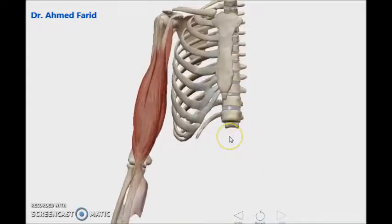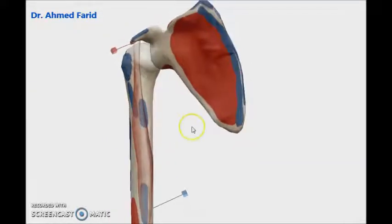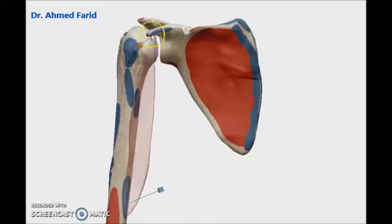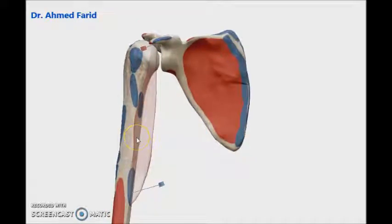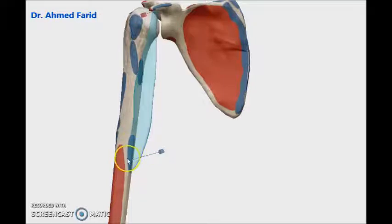Now let's discuss each muscle regarding origin, insertion, and action. The first muscle is coracobrachialis. From its name, it's coming from the coracoid process of the scapula to be inserted into the brachial bone, which is the humerus. It takes origin from the tip of the coracoid process of the scapula, and is inserted into the middle of the medial border of the humerus.